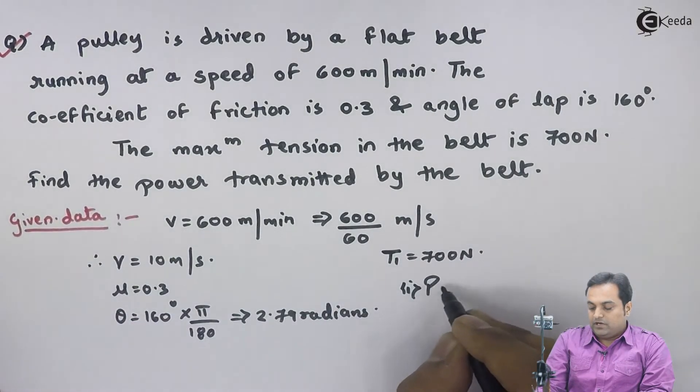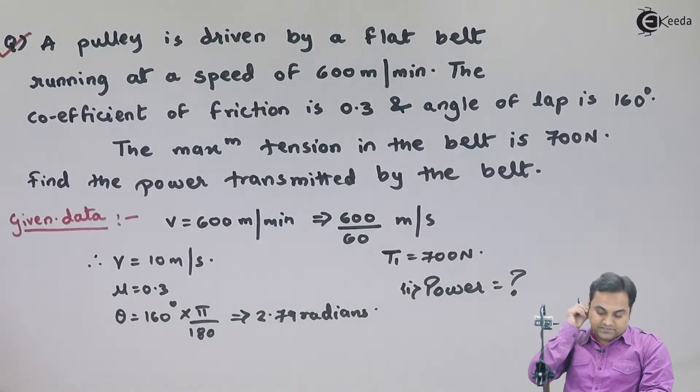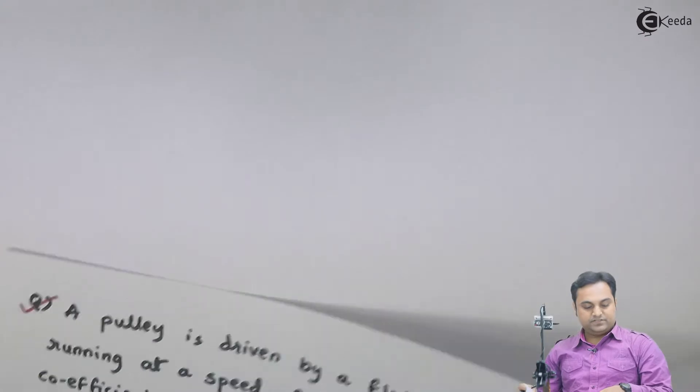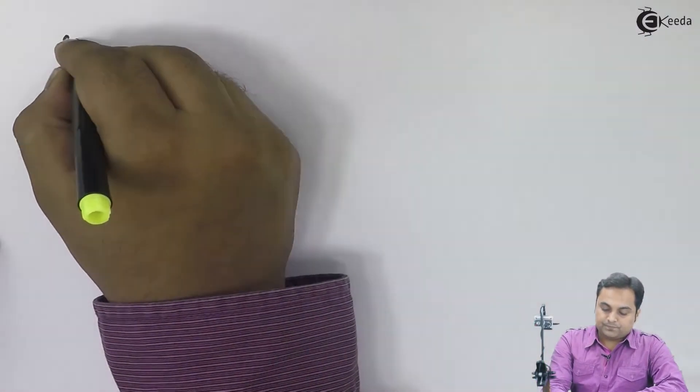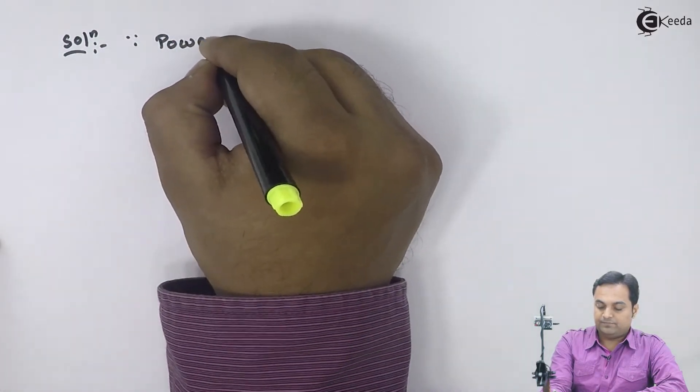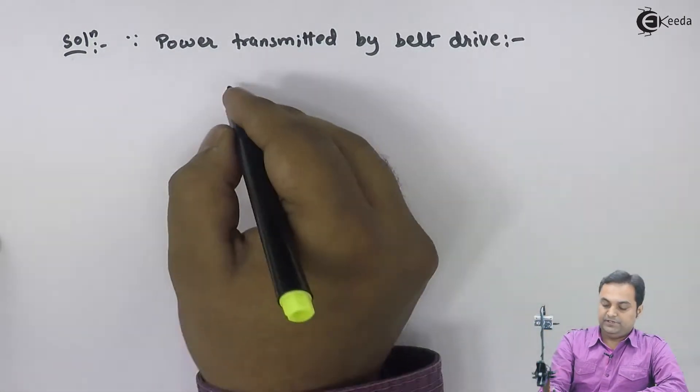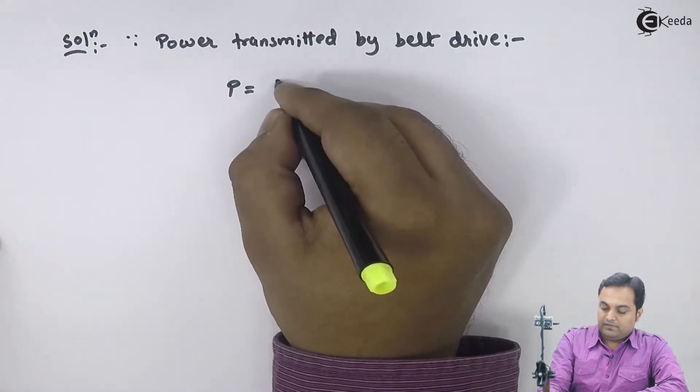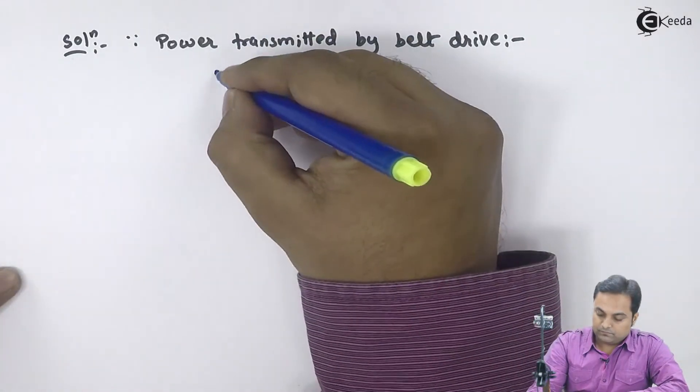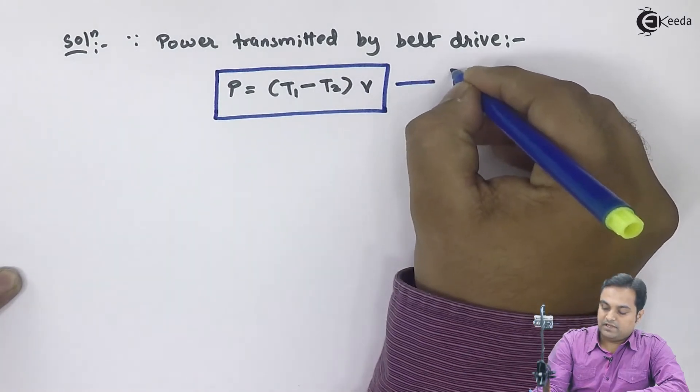Find the power transmitted by the belt. Here we have to calculate how much power is to be transmitted. Since in this question they are asking us to calculate power, I will start from power itself. The power transmitted by belt drive is given by P equals T1 minus T2 times the velocity. I will keep this as equation number 1.